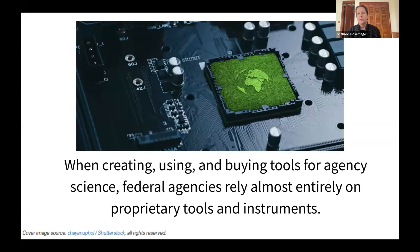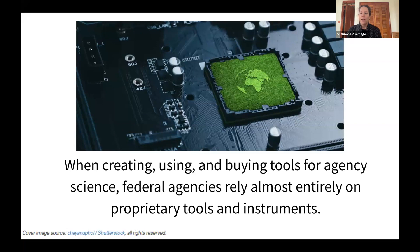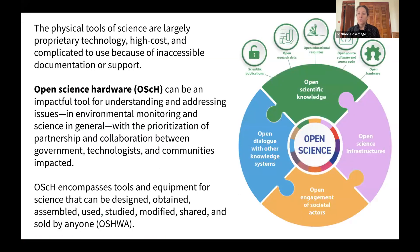In our work for the policy sprint, we prioritized addressing the creation, use, and procurement of tools for agency science, as federal agencies rely almost entirely on proprietary instrumentation. For example, the EPA and partners in all U.S. EPA regions operate air sensor loan programs where sensors are available for local communities. These programs use commercially available air sensor models from various manufacturers, none of them being open source. We think this is a missed opportunity because open source hardware can offer significant benefits to federal agencies and the broader scientific ecosystem.